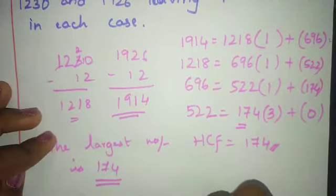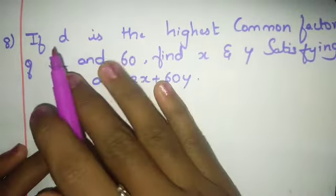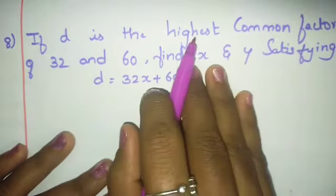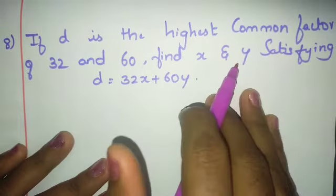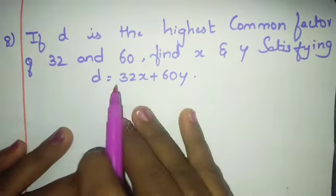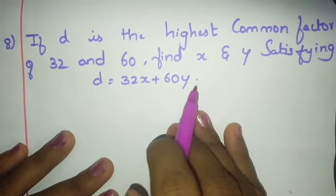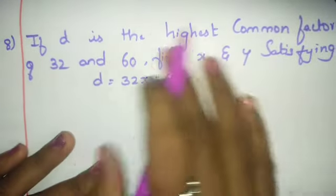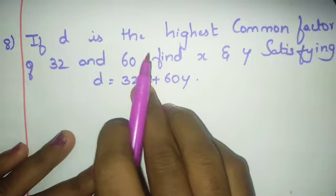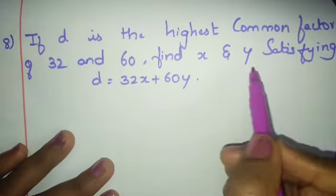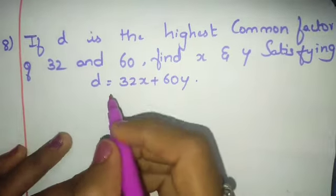Next sum: if d is the highest common factor of 32 and 60, find x and y satisfying d = 32x + 60y. First find the HCF of 32 and 60, then find x and y values satisfying the equation.